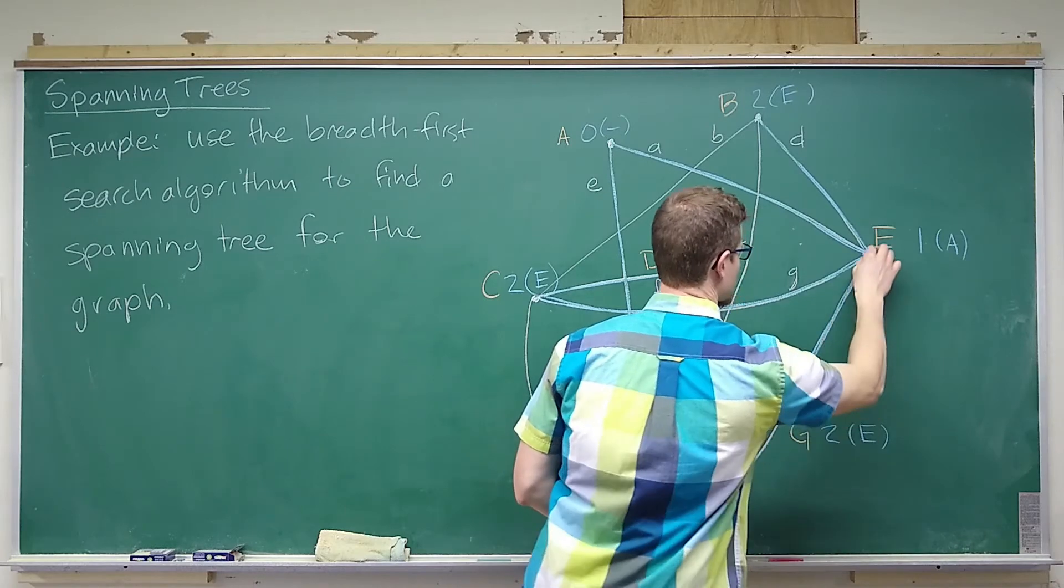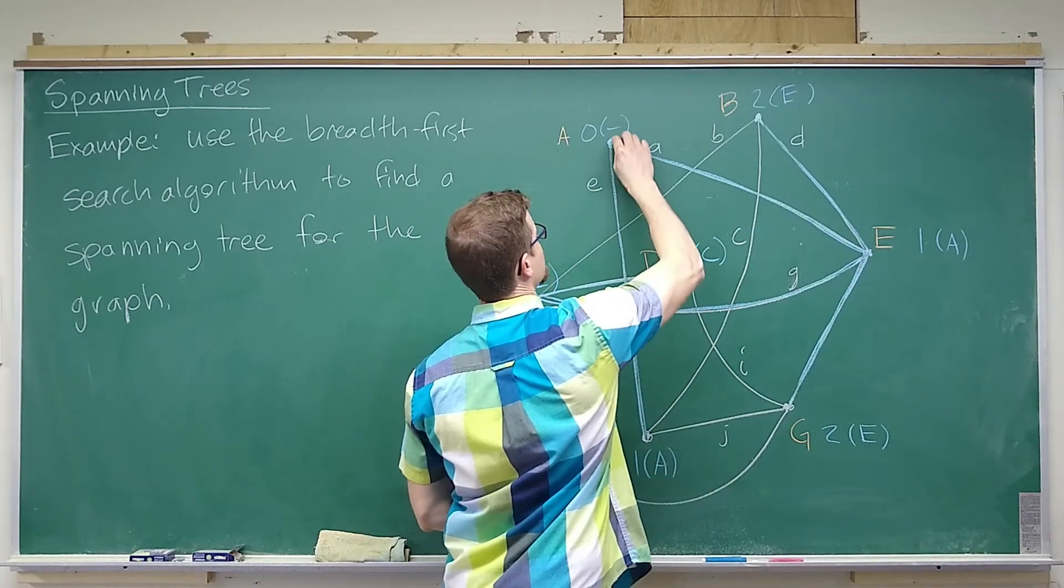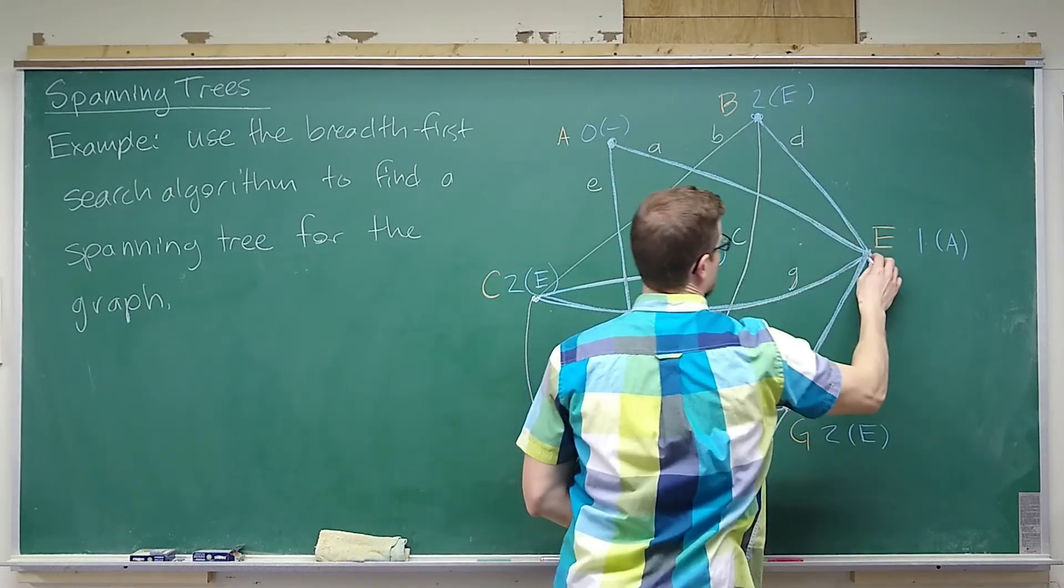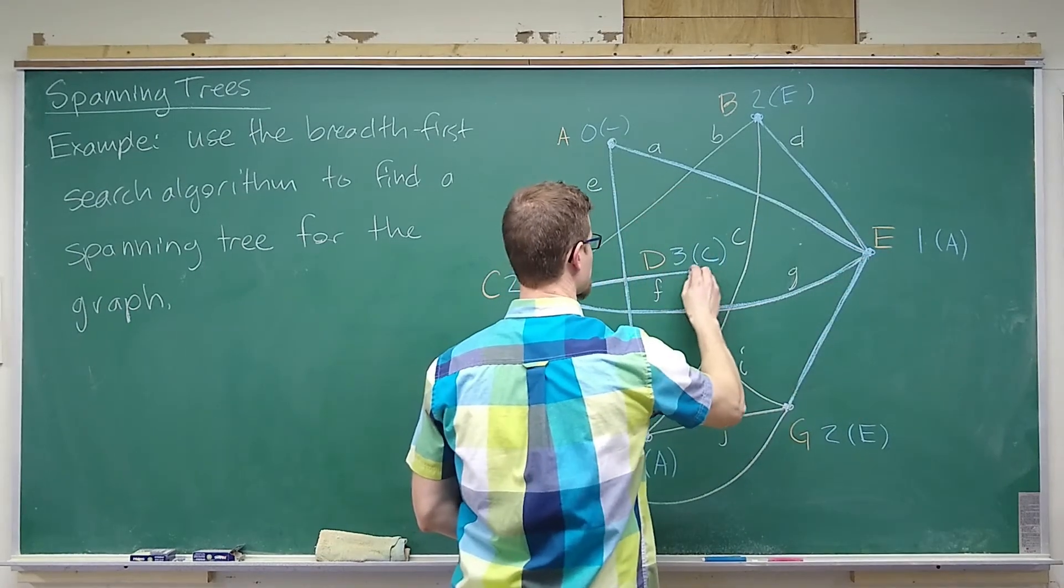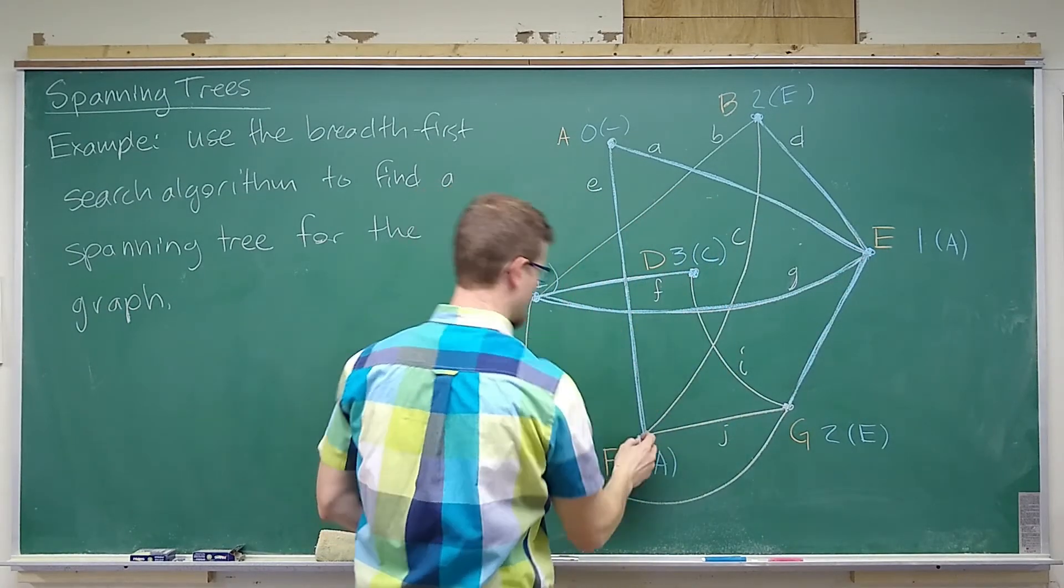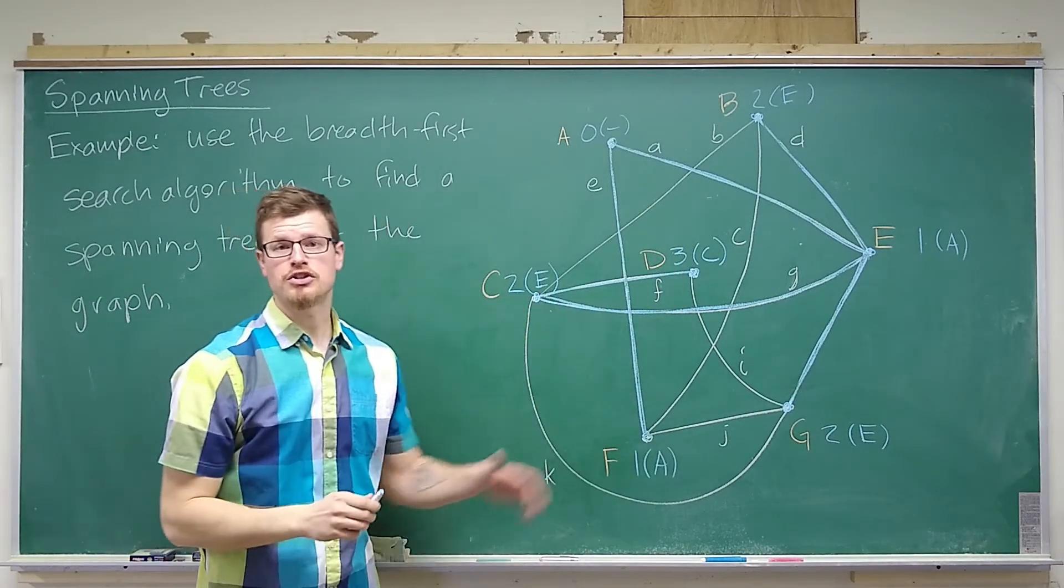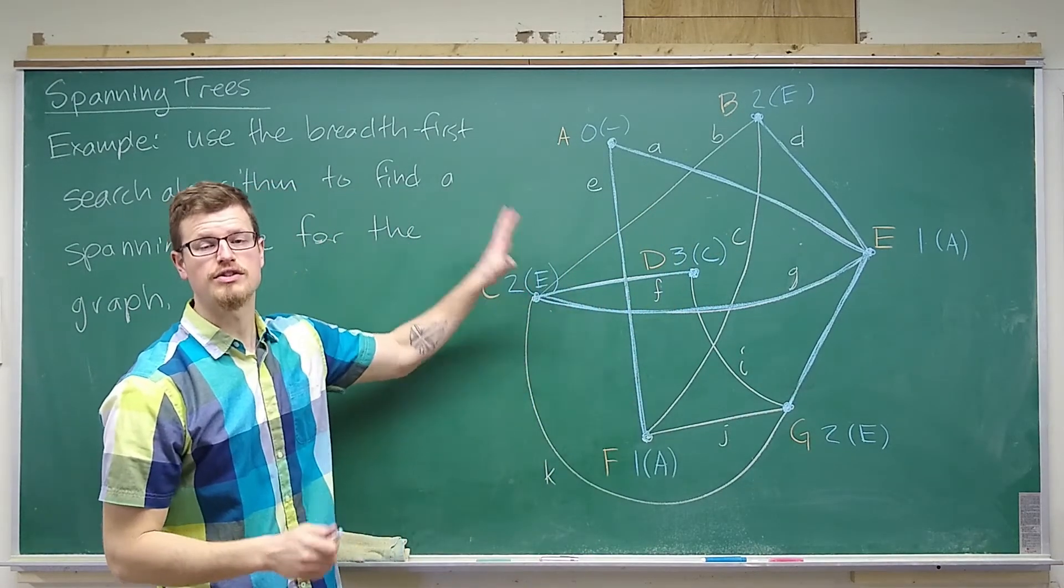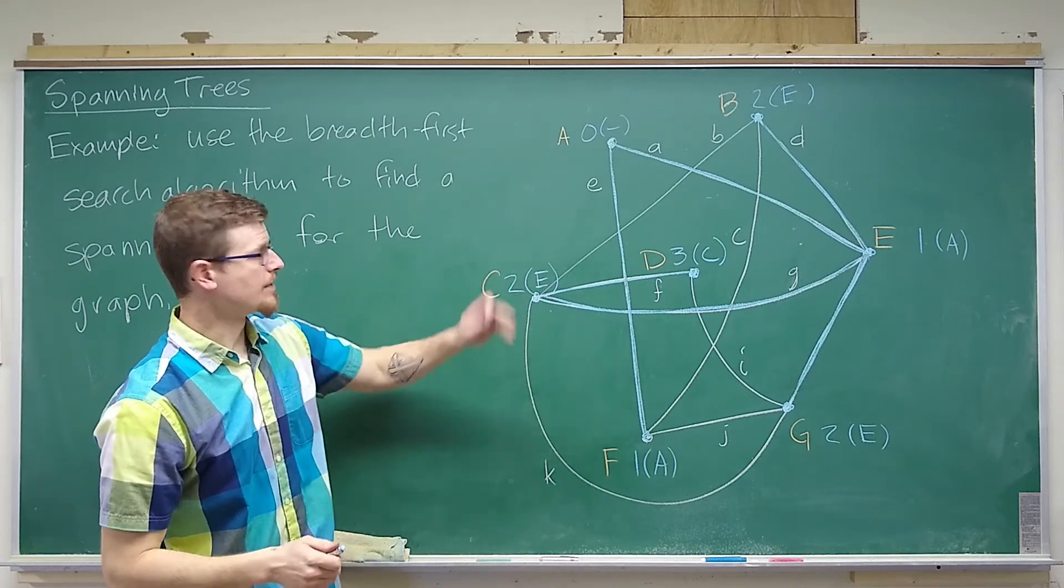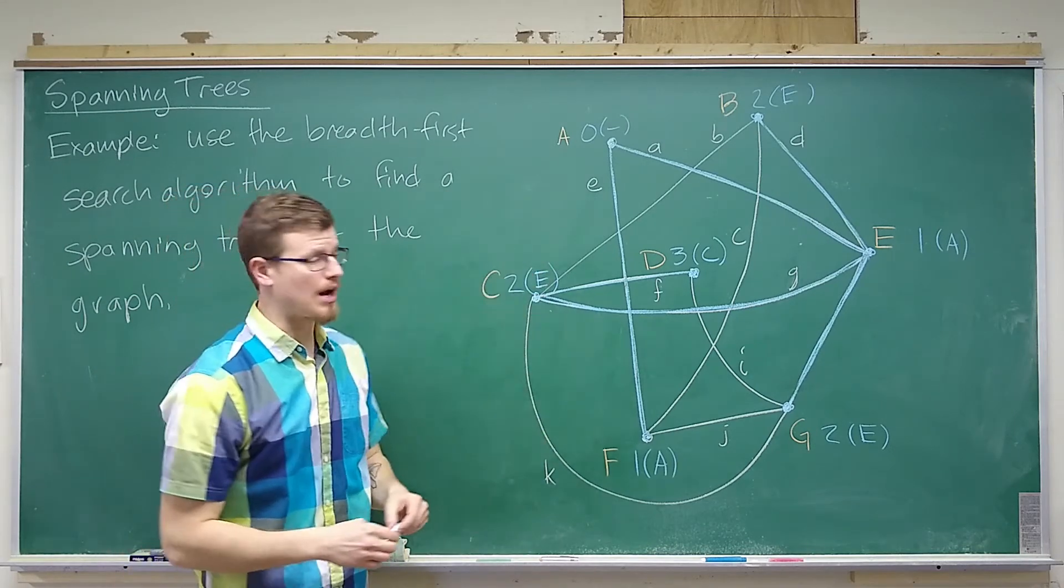And G has predecessor E as well, so we include this edge. Now, what we have is a new graph in blue here that is, in fact, a tree. And this tree contains all of the vertices of our graph, hence it is a spanning tree of our graph.